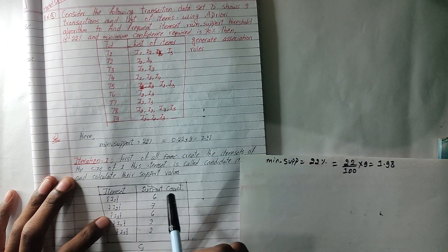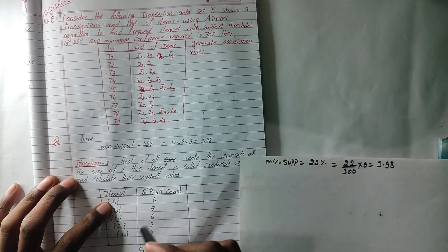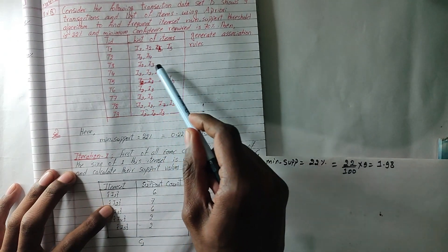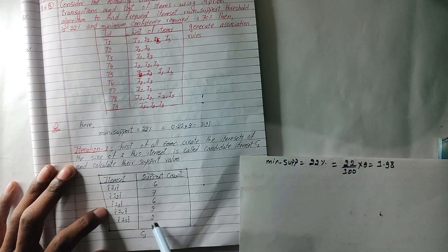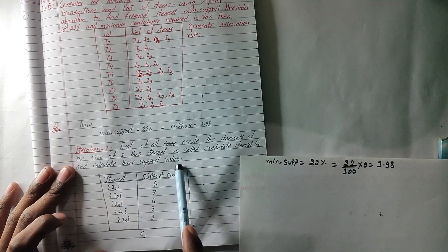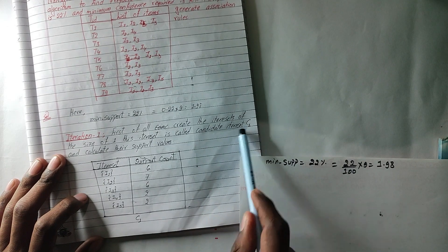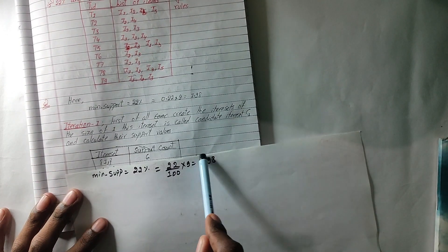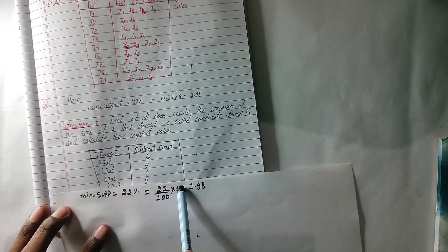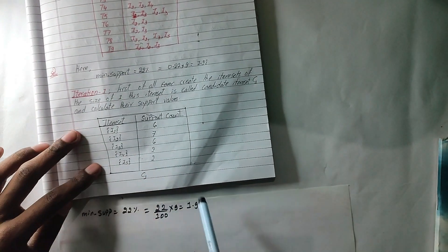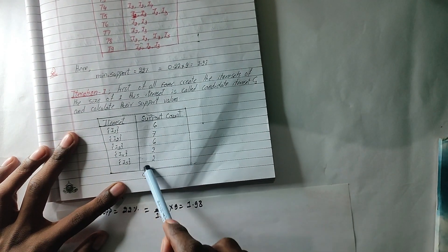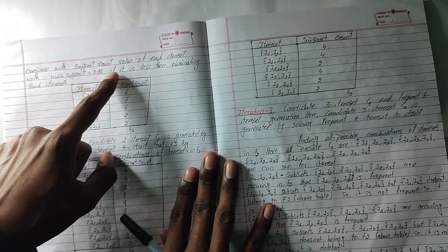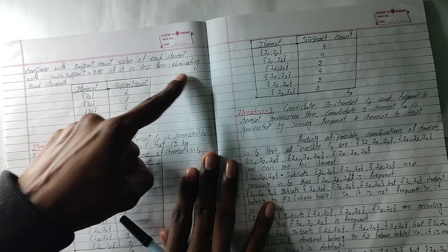So this is the support count. For I1: count the occurrences. For I2: count the occurrences. So if you do this table, you can see the candidate item set C1. The table compares values to 1.98. If it is less, then we are eliminating such items. The 2-items from the 1.98 threshold — if it is less, we eliminate.